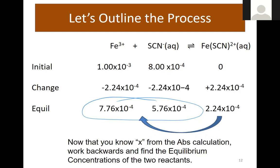So doing the subtraction, I've got 5.76 times 10⁻⁴ and 7.76 times 10⁻⁴ for my equilibrium concentrations of the two reactants.